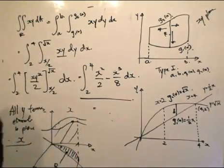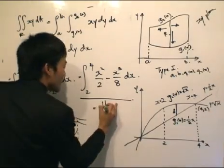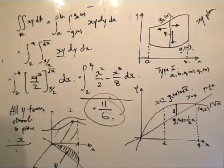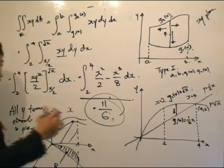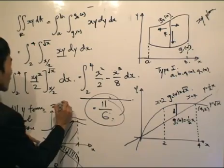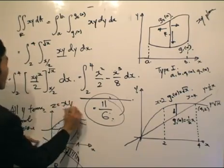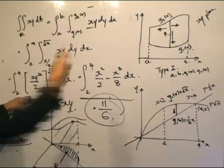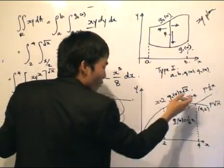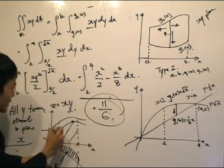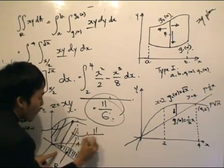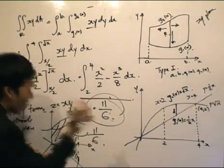We then evaluate the integral in terms of X and get 11/6. This number is the volume in units cubed, bounded by the surface Z = X·Y and the region R which we defined — and that volume is 11/6.